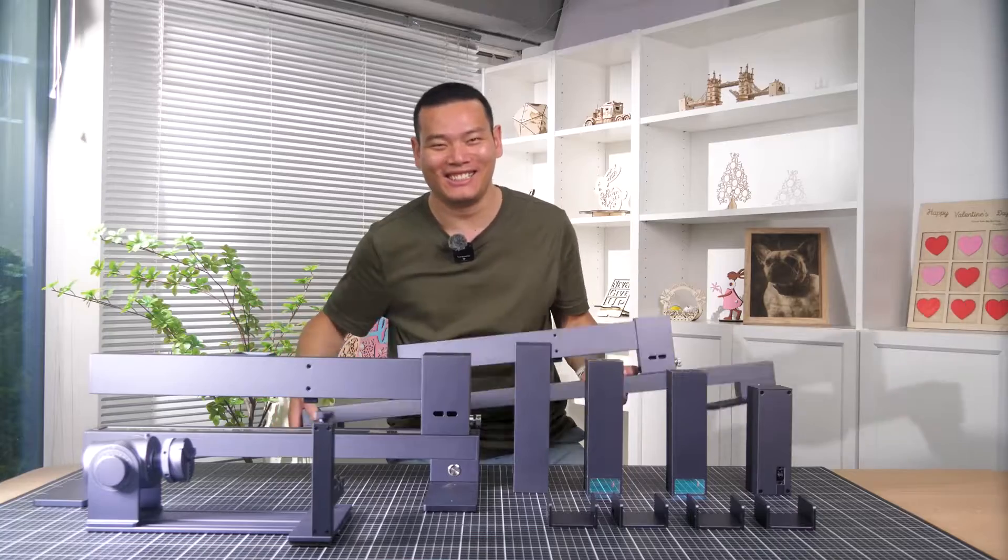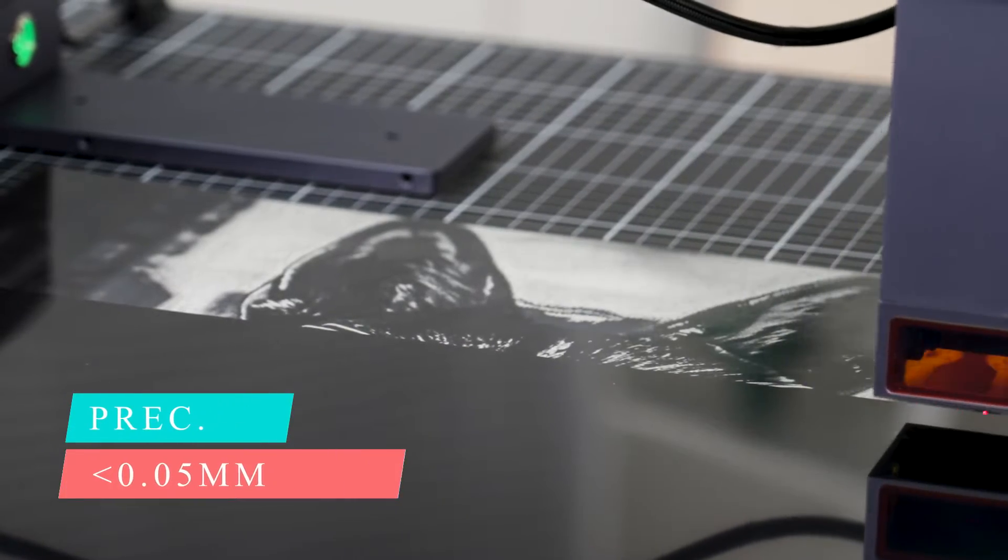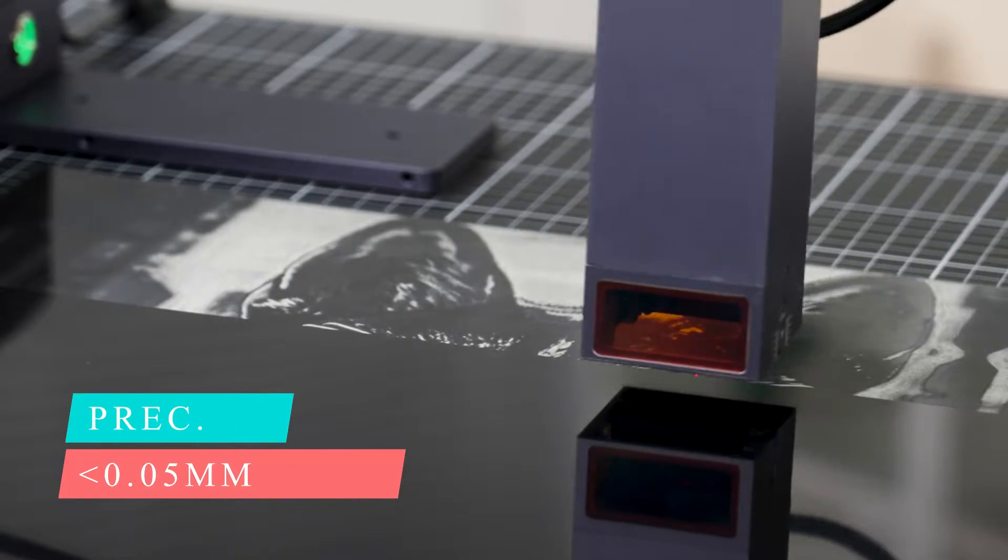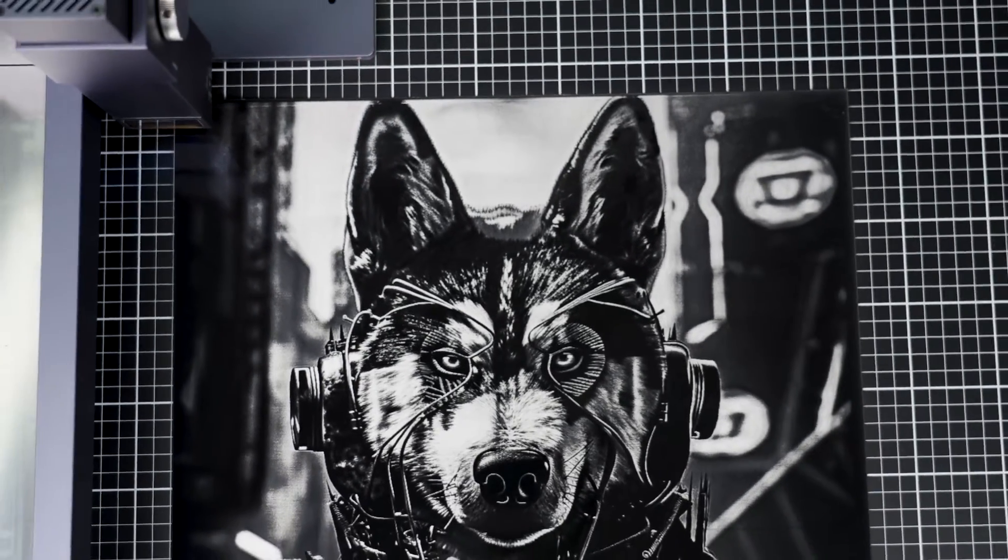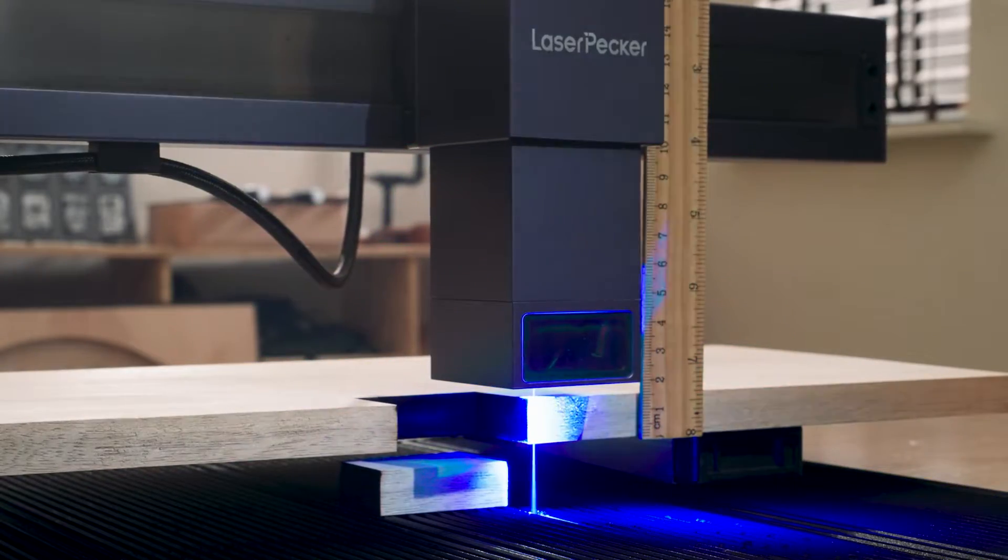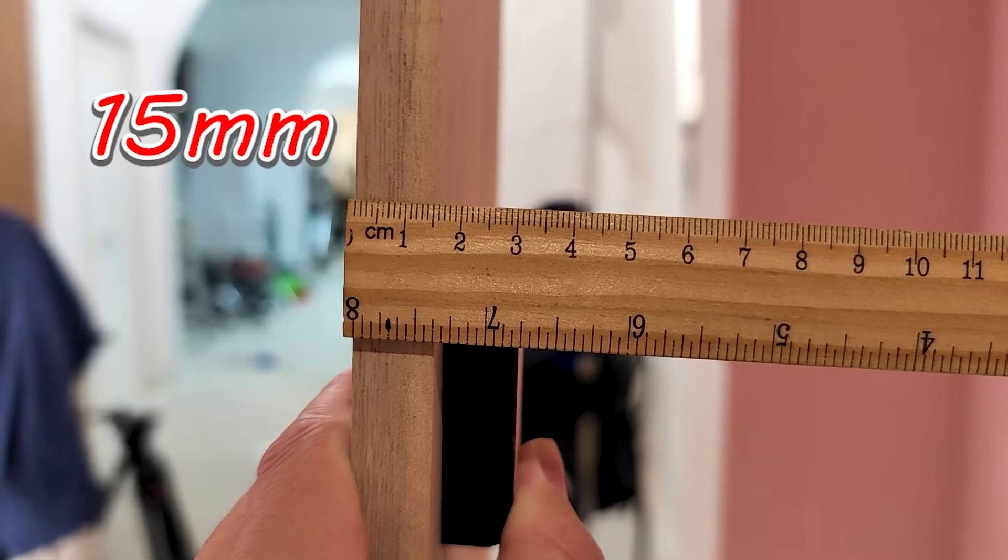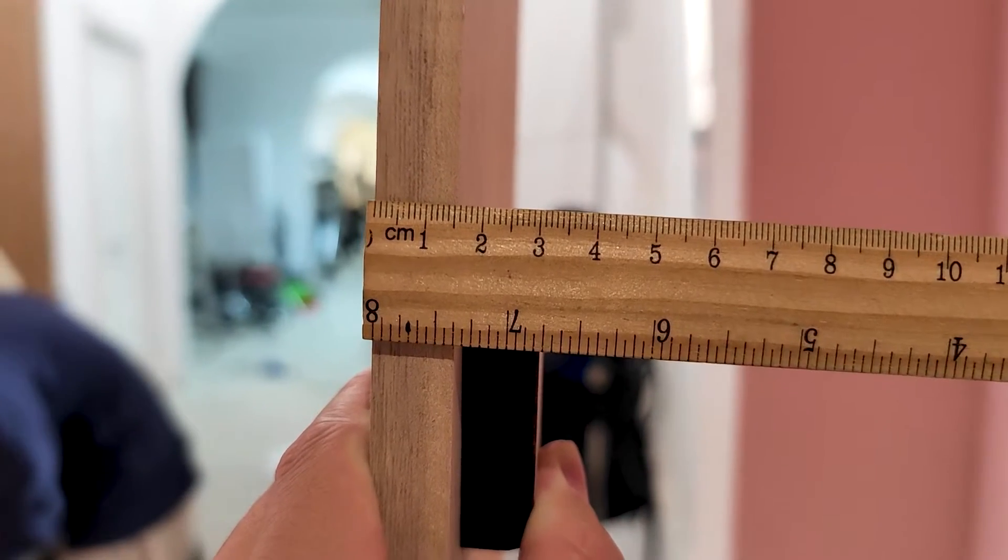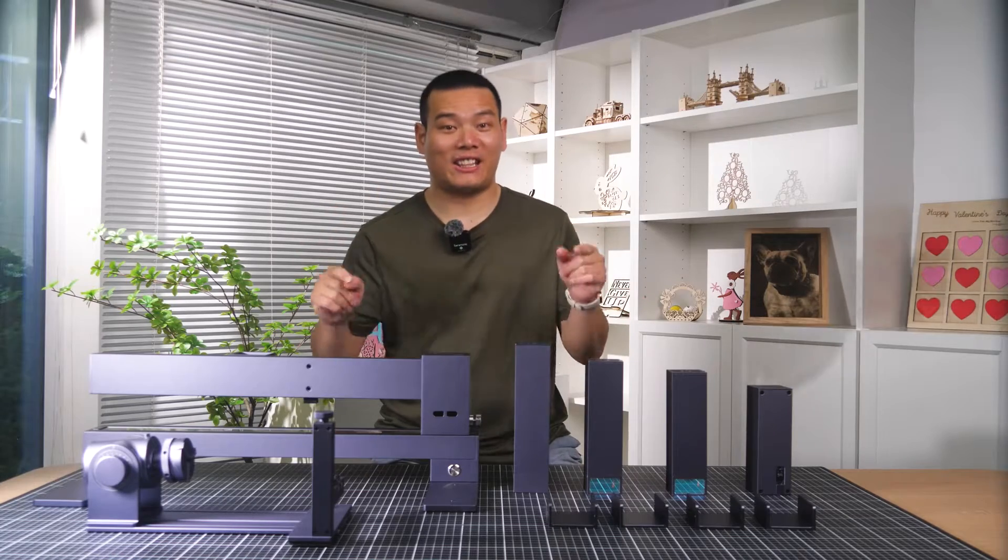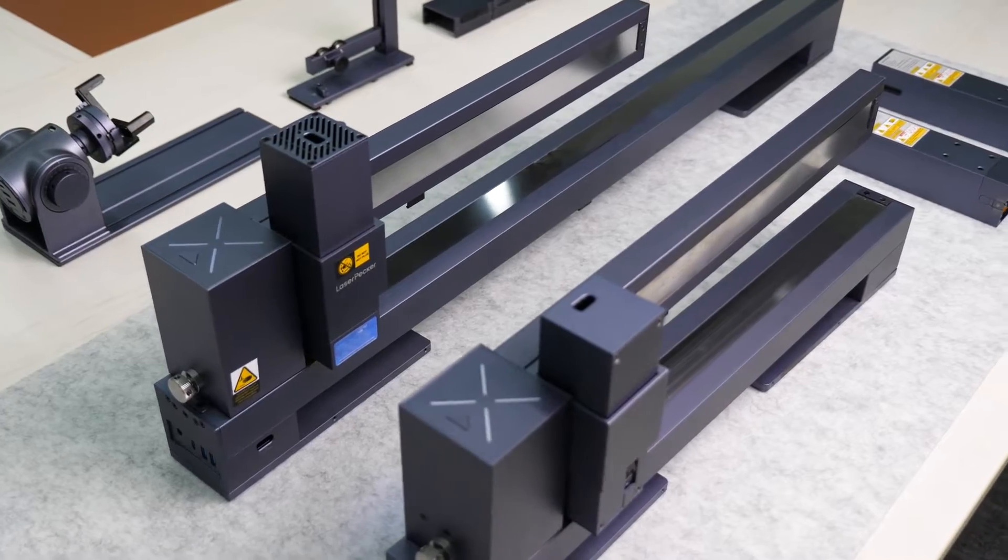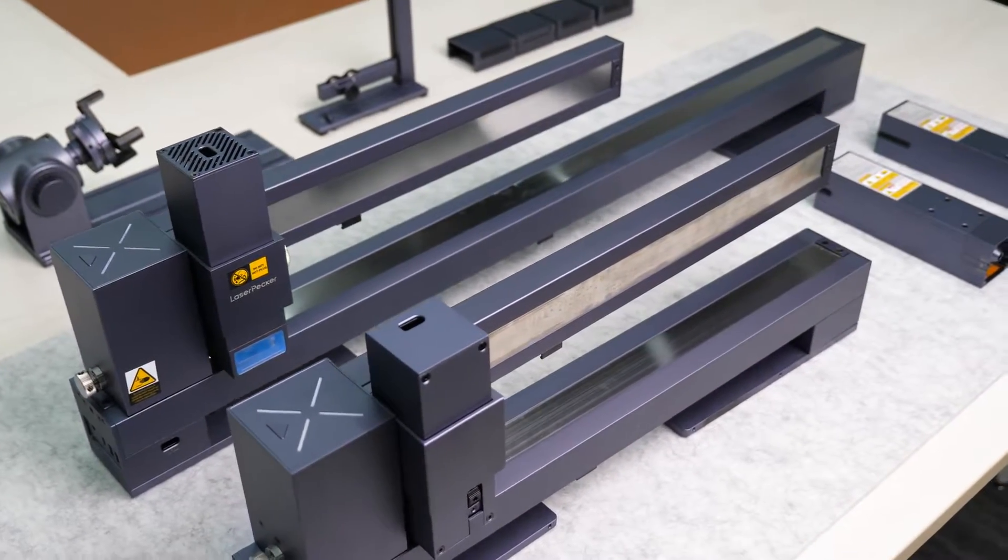With engraving precision below 0.01mm, the level of detail is simply incredible. And the machine can cut through solid wood up to 15mm thick in one pass. I've never seen anything like this before, and I just can't wait to share everything about this machine with you.